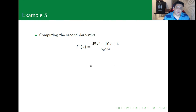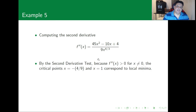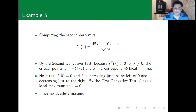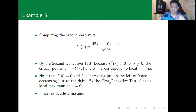Computing the second derivative gives (45x² - 10x + 4) divided by 9x^(4/3). From this, the critical points at x = -4/9 and x = 1 correspond to local minima. f(0) = 0 for this function, and since f is increasing just to the left of 0 and decreasing just to the right, by the first derivative test x = 0 is a local maximum — though not an absolute maximum.